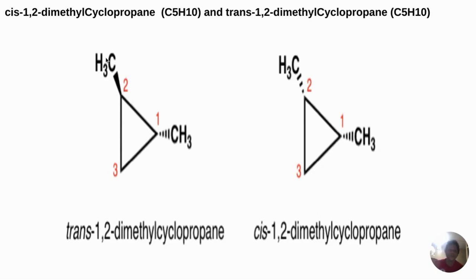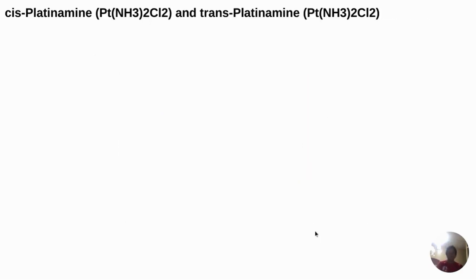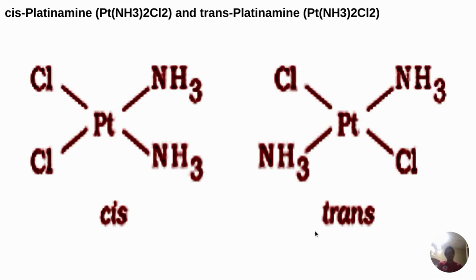For cyclic compounds like cis-1,2-dimethylcyclopropane and trans-1,2-dimethylcyclopropane: a wedge bond means we are looking at the group coming towards us, while a dash bond means it is going away. In the cis form both CH3 groups are wedge bonds, while in the trans form one is a wedge and one is a dash, meaning they are on different sides. The same concept applies to cisplatin and transplatin, where platinum is at the center with amine groups and chlorines — in cis they are on the same side, in trans they are on opposite sides.